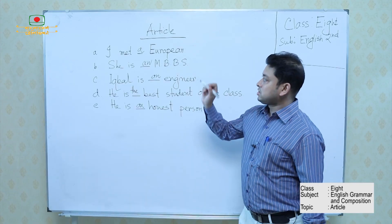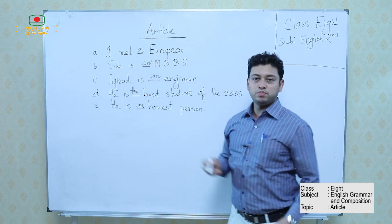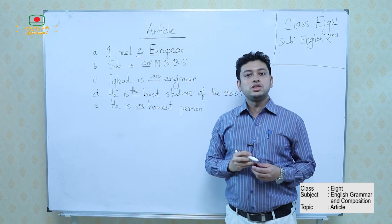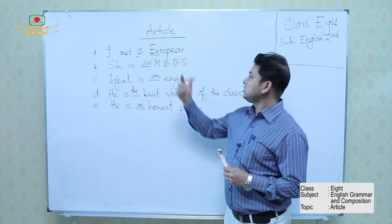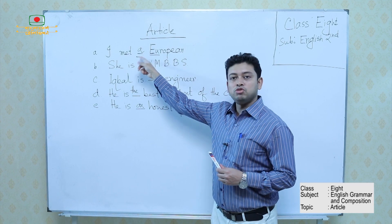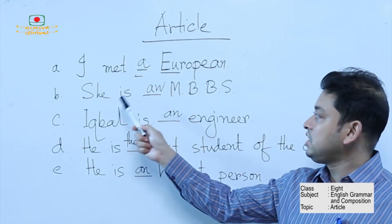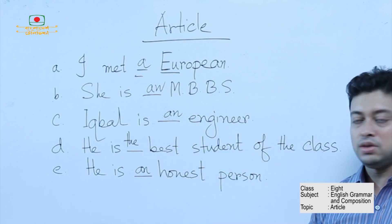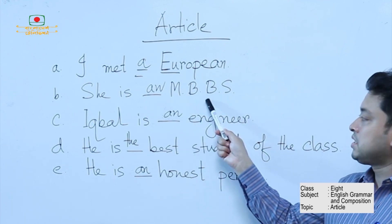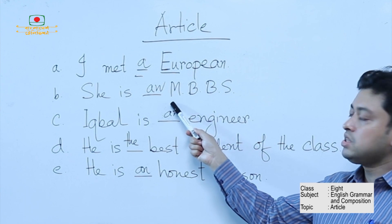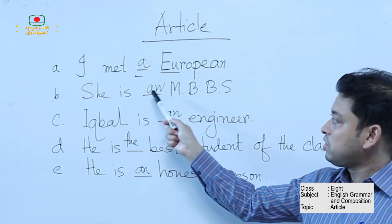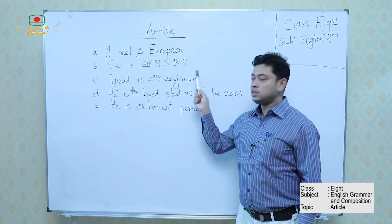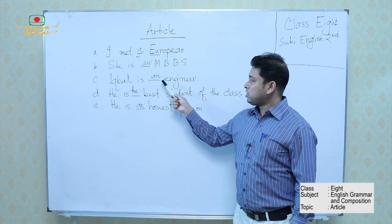The first sentence is 'I met a European.' Why is it A? Because the sound is 'Yu' — a vowel-like consonant sound, so the article will be A. In the second sentence, 'She is an MBBS' — this is an abbreviated form, Bachelor of Medicine, Bachelor of Surgery. The sound is a vowel sound, that's why AN. Third example: 'Iqbal is an engineer' — here it starts with a vowel, that's why AN.